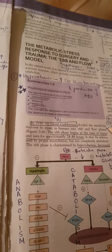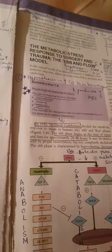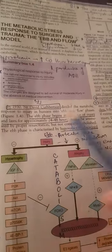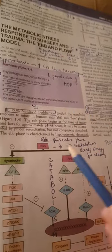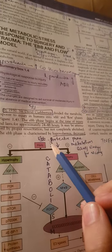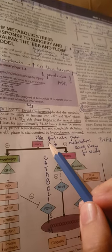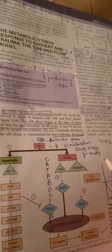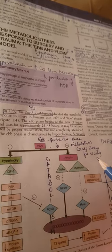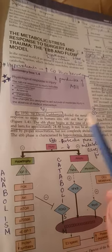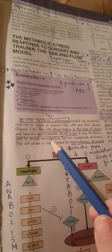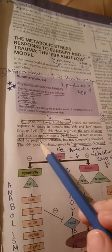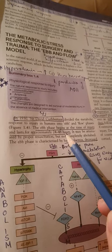The first part of the response to injury is the ebb phase, which is a protective phase in which metabolism decreases and the body saves energy for recovering. They can ask in MCQ how long it lasts for - it lasts for approximately 24 to 48 hours.